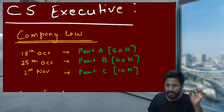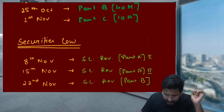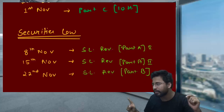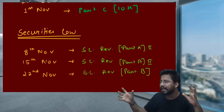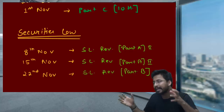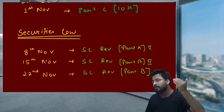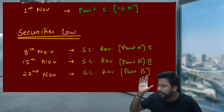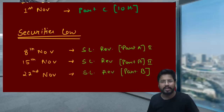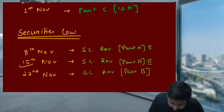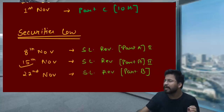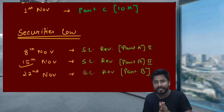The schedule for Securities Law is 8th November, 15th November, and 22nd November. On 8th November, Part A first half; 15th November, Part A second half — because it is 70 marks. On 22nd November, Part B will be comfortably completed in one day. Note that the 15th November date may change slightly because of Diwali — if it does, you will be informed.